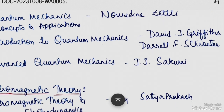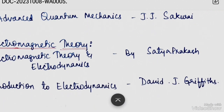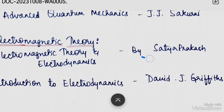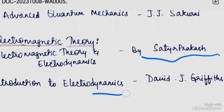The next subject is Electromagnetic Theory. The recommended books are Electromagnetic Theory and Electrodynamics by Sathya Prakash, and An Introduction to Electrodynamics by David J. Griffith. The Griffith book covers both Quantum Mechanics and Electromagnetic Theory.